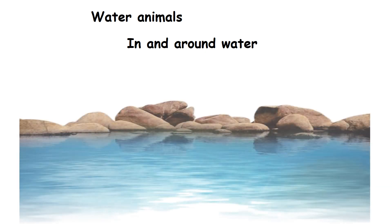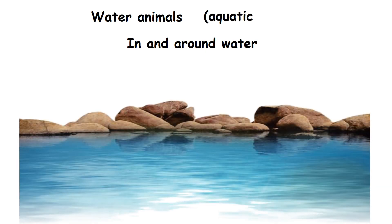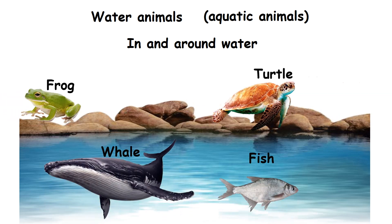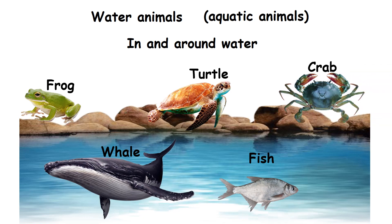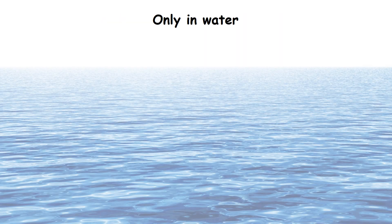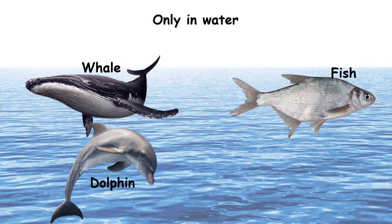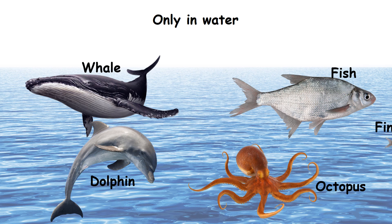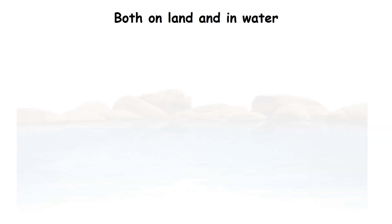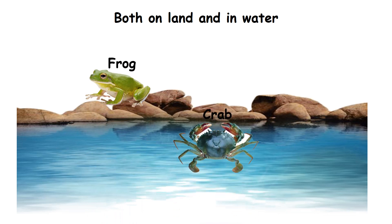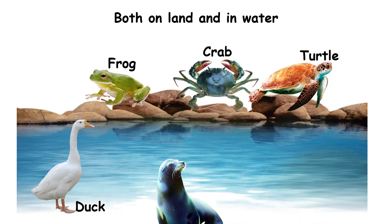Water animals live in and around water. They are also called aquatic animals. Examples: fish, whale, frog, turtle and crab. Some animals live only in water: fish, whale, dolphin and octopus. The young one of a fish is called a fingerling. Some animals live both on land and in water: frog, crab, turtle, duck, seal and crocodile. The young one of a frog is a tadpole.